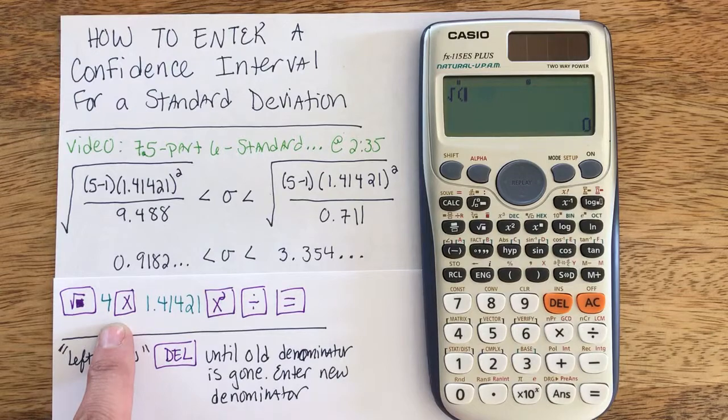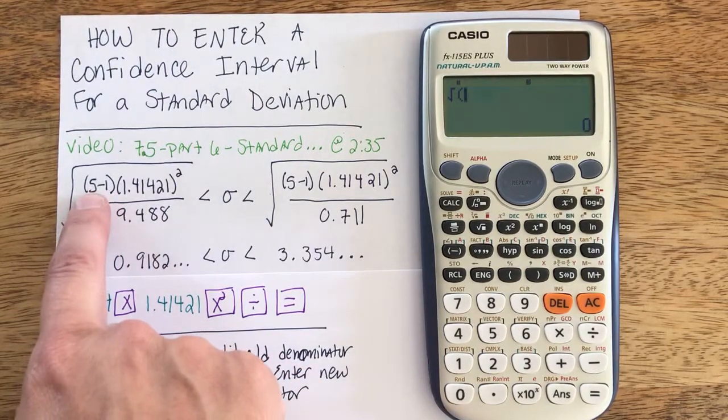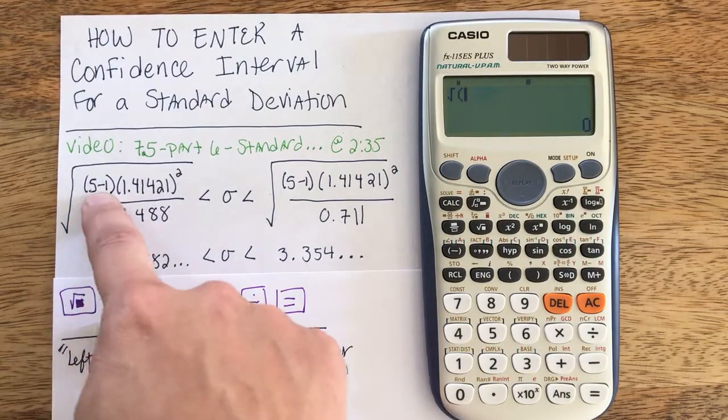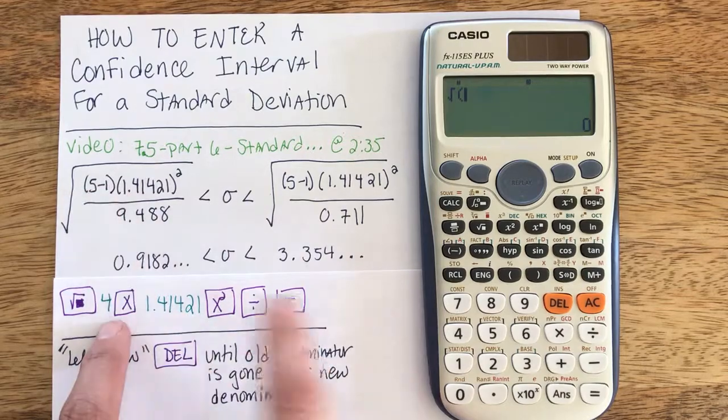But to make sure everything works correctly, go ahead and subtract the sample size n minus 1, your degrees of freedom. Do that in your head first so whatever n is just subtract 1. So in my case 5 minus 1 is 4.